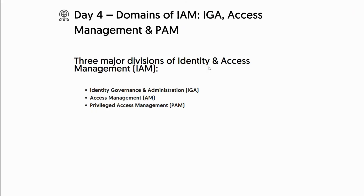Hello everyone, this is day four where we'll be discussing the different domains and subdomains within identity access management. There are three primary domains that organizations use under the IAM umbrella. The first one is Identity Governance and Administration (IGA), the second is Access Management, and the third is Privilege Access Management. These are the main three divisions.